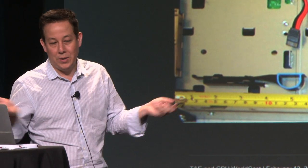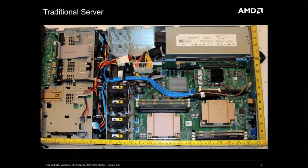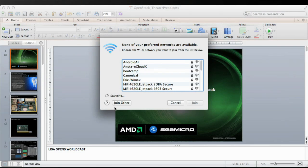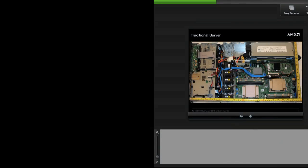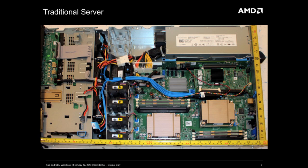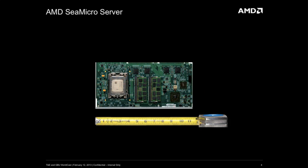We looked at the traditional server and said, what can we do to innovate on this? This was the innovation. We looked at how to consolidate it to something that really matters for the scale-out cloud environment, and we collapsed that. We simplified it to bring down the power and space, and this is our server.